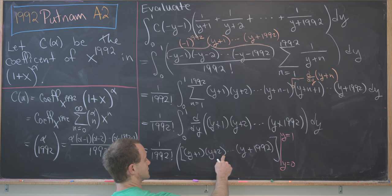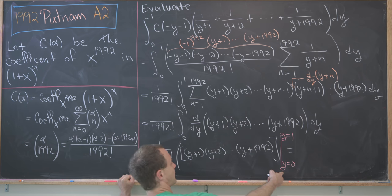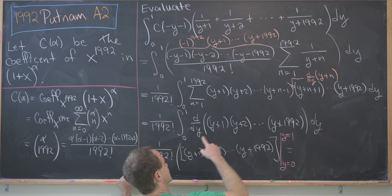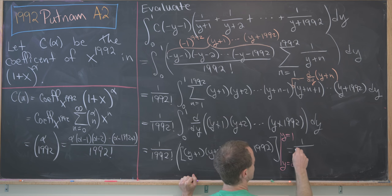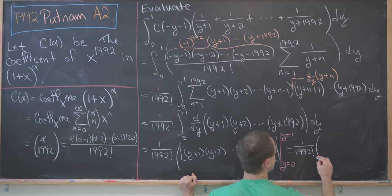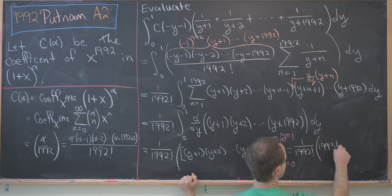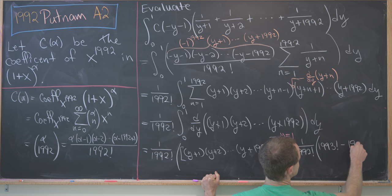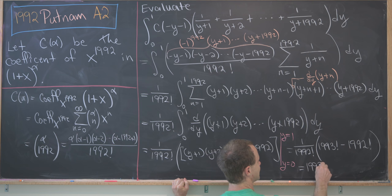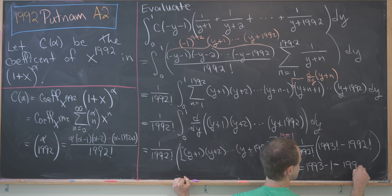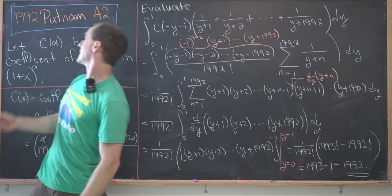Evaluating at y=1 gives us 1993 factorial because we'll have 2×3×4 all the way up to 1993. Evaluating at y=0 gives us 1×2 up to 1992, so that's 1992 factorial. That leaves us with 1/(1992!) times (1993! - 1992!). But after simplification, we see that equals 1993 - 1, which is 1992, a very fitting answer to this problem from the year 1992.